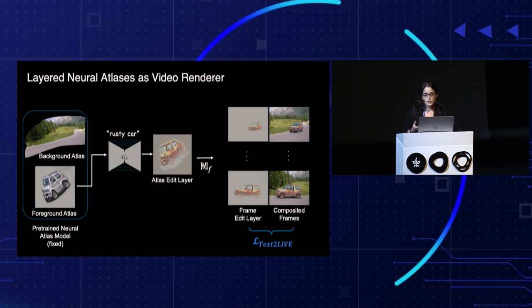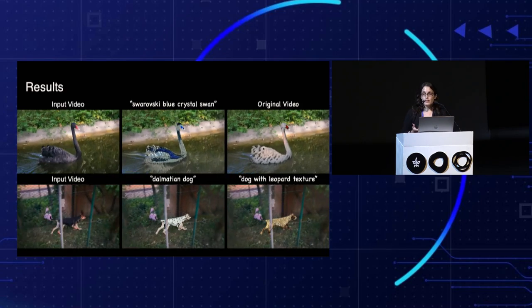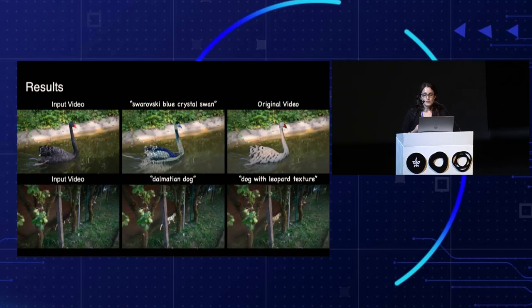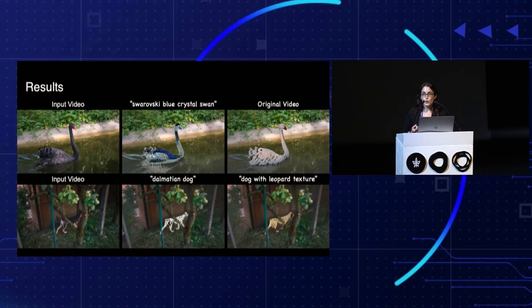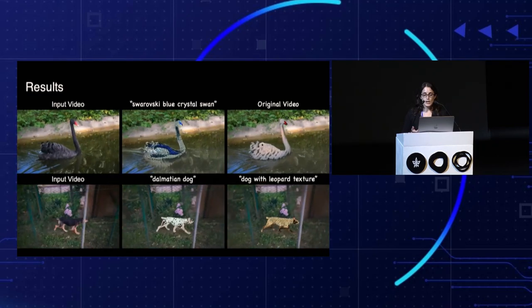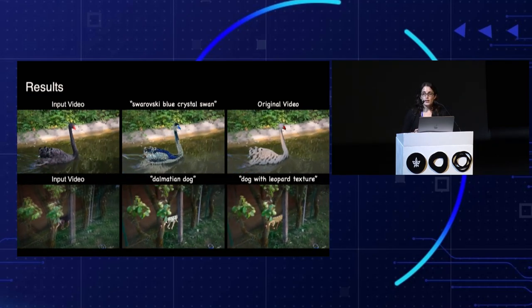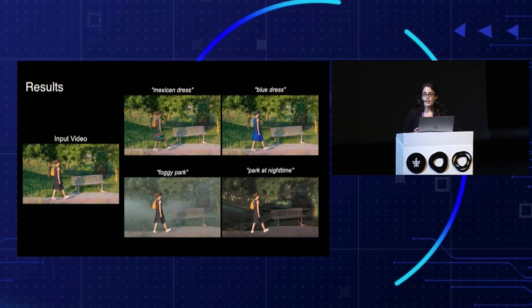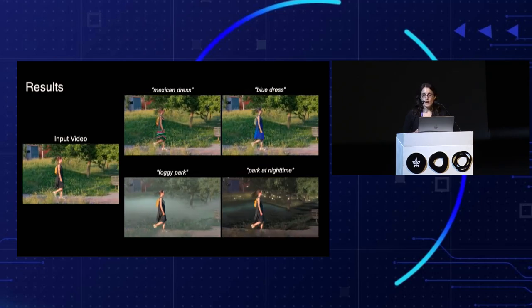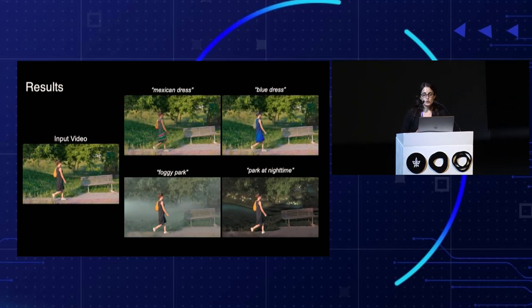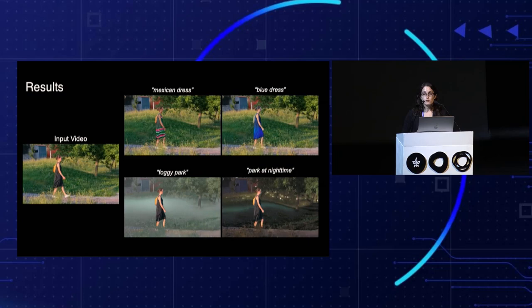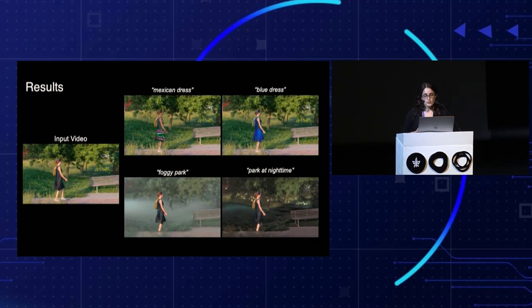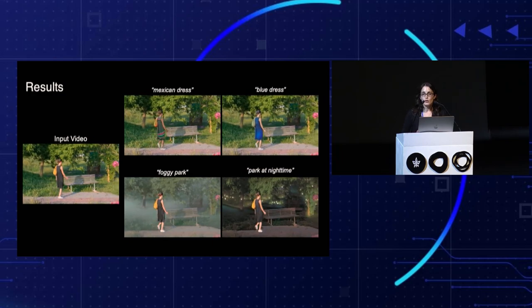We see that in order to edit a video, all we need is to train our generator using the pre-computed atlas representation. Looking at the results, Text2Live achieves temporally consistent edits and synthesizes photorealistic textures in a semantically aware manner — for example, the beak of the swan in the top row. It also automatically localizes the region of interest, such as editing only the dress of the woman. In addition, it manages to augment the scene with semi-transparent effects such as fog in a foggy park. As far as we know, we're the first to show these types of edits on real-world videos.